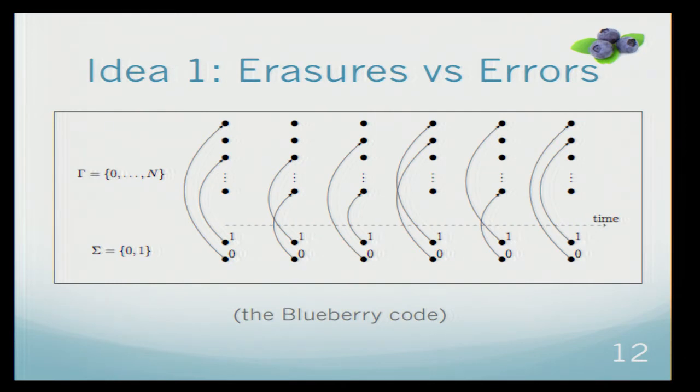The blueberry code is just the following thing. Every time that Alice wants to send a bit, she will just map it into some larger alphabet. But she will map it in a random way so that the adversary doesn't know the mapping. Only Alice and Bob will use their authentication key to do this random mapping.